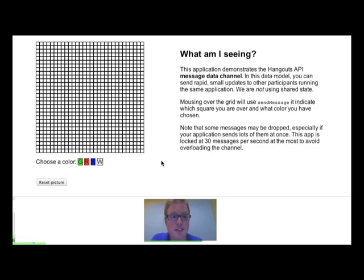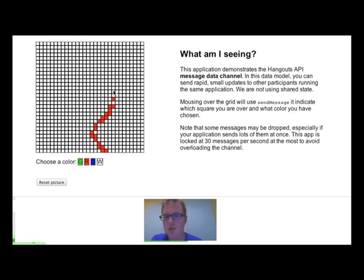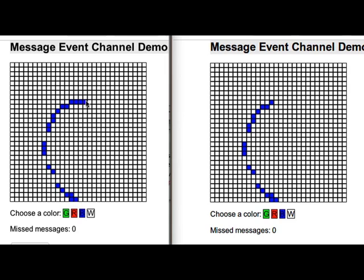So we've added a new message data channel, which lets you send low latency messages from your machine to everyone else in the Hangout. In this example, I can draw with my mouse, which is fine, but it gets a lot more exciting when we add two different participants. So in this example, I have two Hangouts running side by side on different computers, so if I draw on one, it appears on the other one nearly instantaneously.